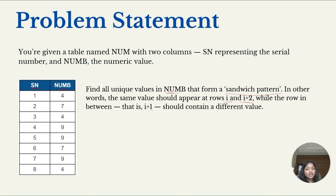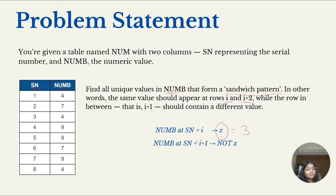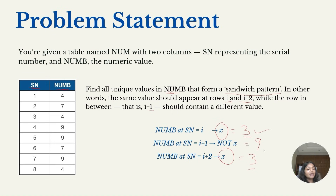In other words, if num at serial number i has value x — let's say 3 — then num at serial number i+1 should not be x, so it could be something like 9. And num at serial number i+2 should again be 3. So it's making a sandwich pattern: 3, 9, 3, where the first and third values are the same and the middle value is different.